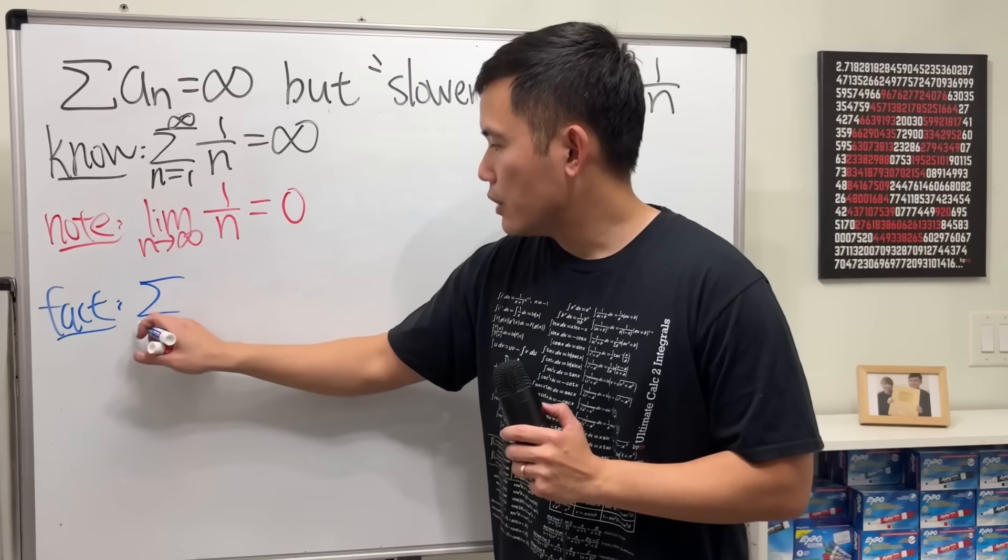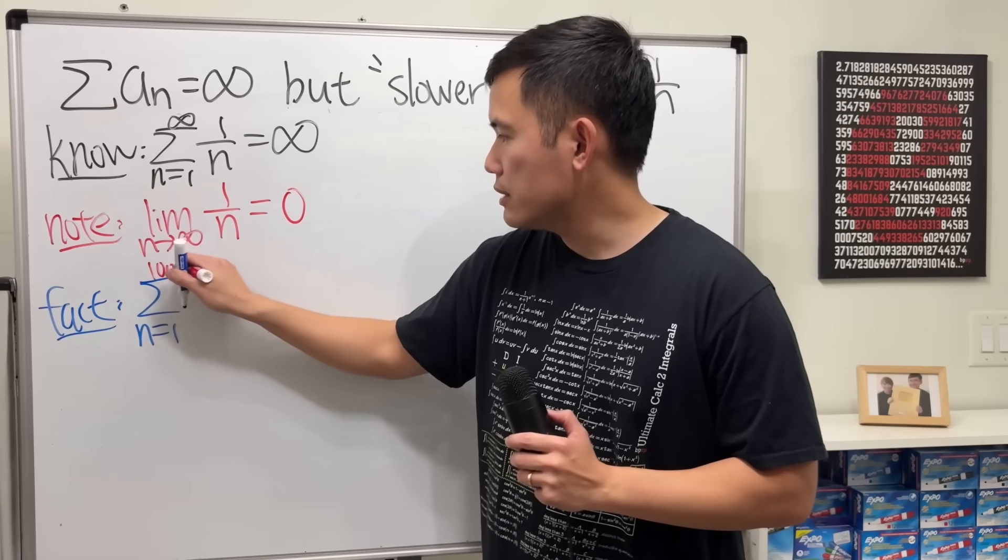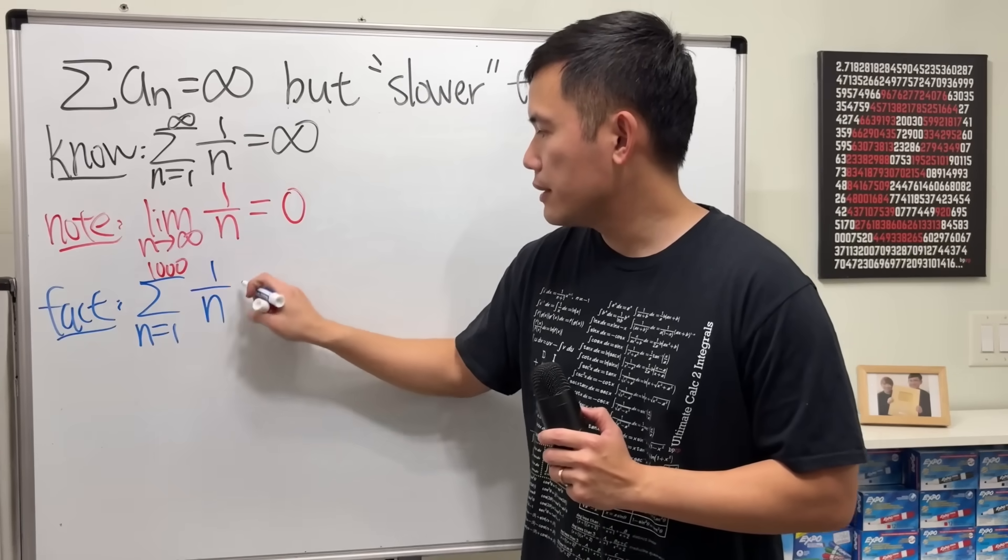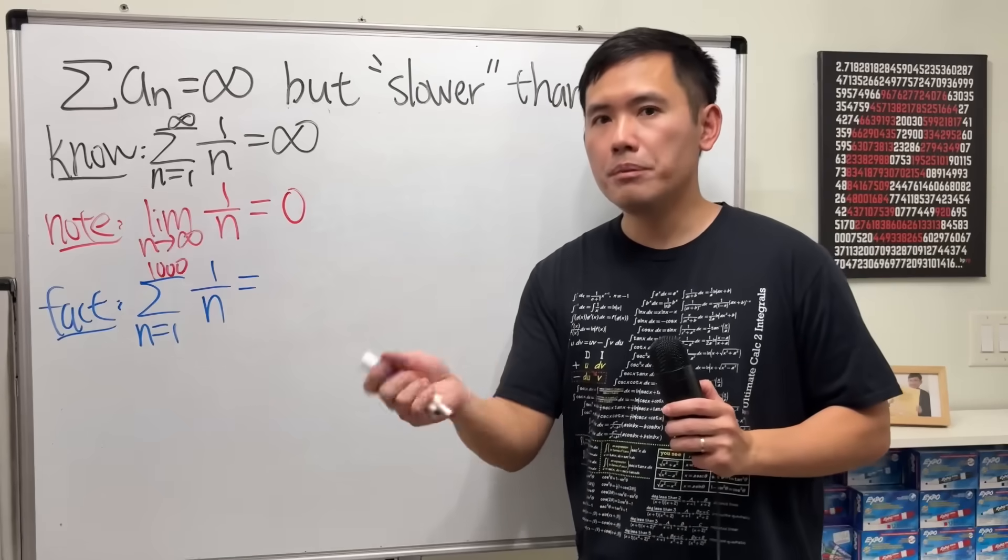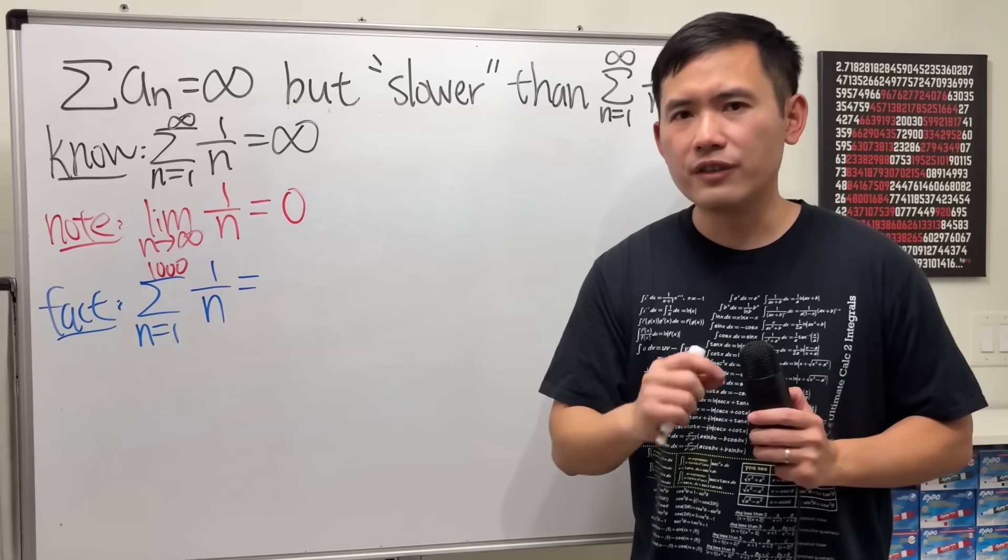If we are just adding when n goes from 1 to 1,000 of 1 over n, this means 1 plus 1/2 plus dot dot dot up to only 1 over 1,000. We have 1,000 fractions.